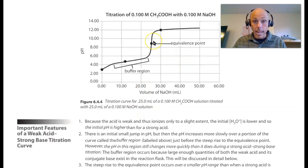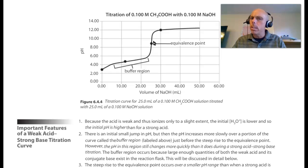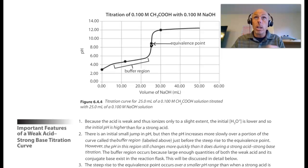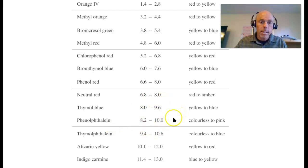If we were asked to pick an indicator to indicate the equivalence point of a strong base/weak acid titration, where at the equivalence point the pH is greater than 7 — let's say 8.8 — we want an indicator whose pKa is as close to 8.8 as possible. Looking at Appendix A6, thymol blue or phenolphthalein would be good indicators for a strong base/weak acid titration. In fact, phenolphthalein is the one that is typically used.